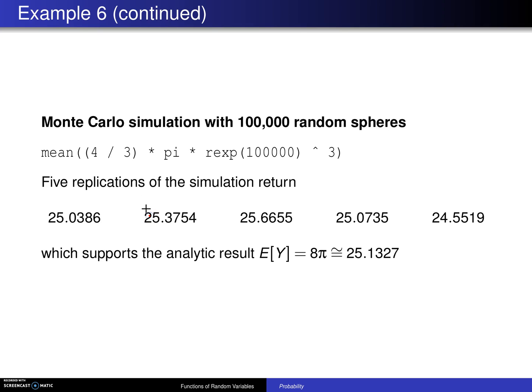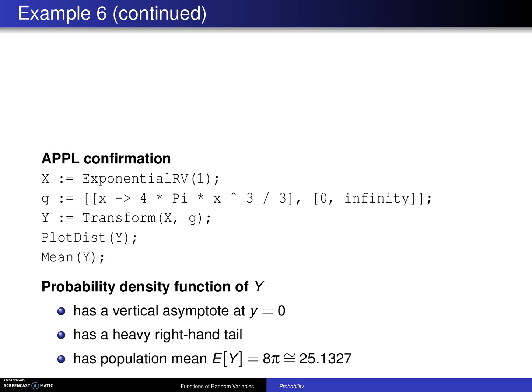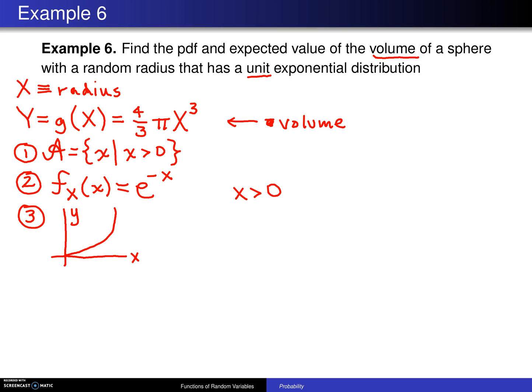So by the vertical line test that is a function, and by the horizontal line test it is a one-to-one function. The answer to this one is yes, Y equals g of X is a one-to-one function on the support.